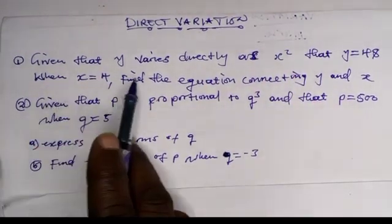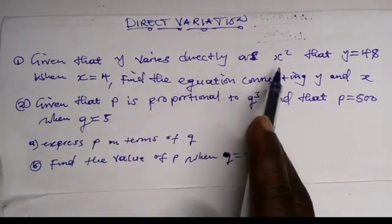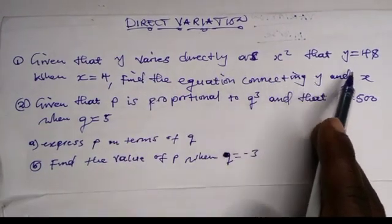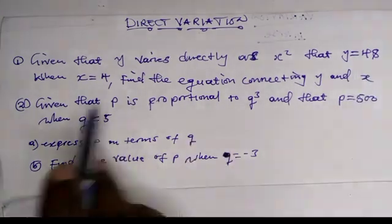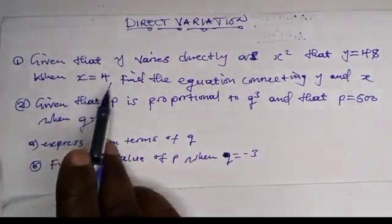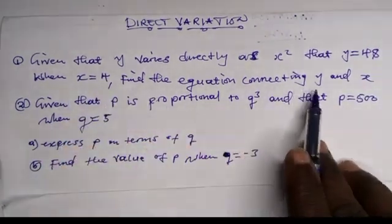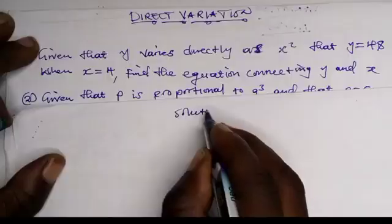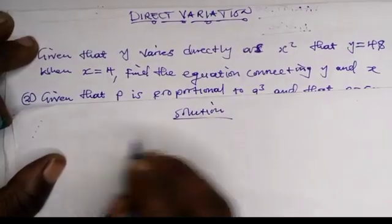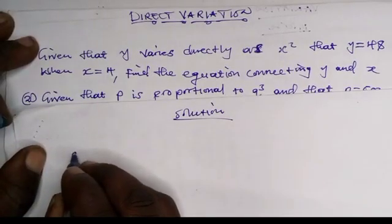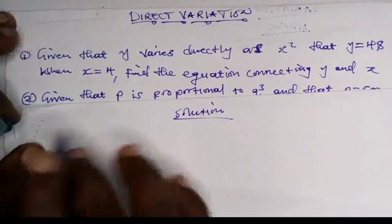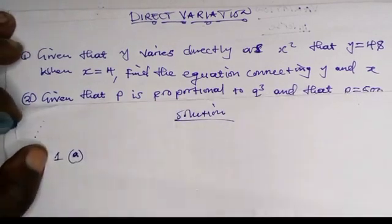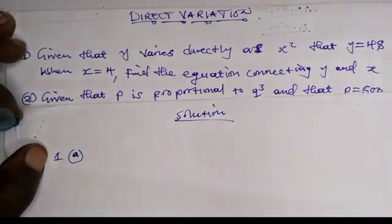We are given that y varies directly as x squared, that y equals 48 when x equals 4. Find the equation connecting y and x. This is question 1a. We are told to find the equation connecting y and x.